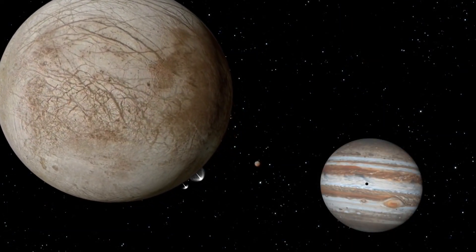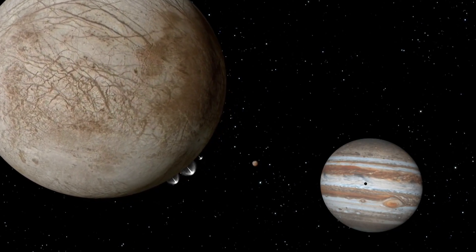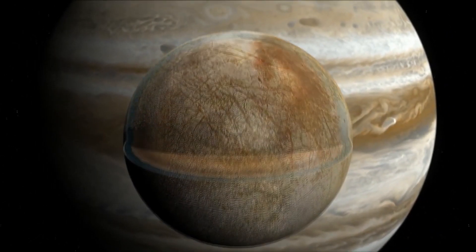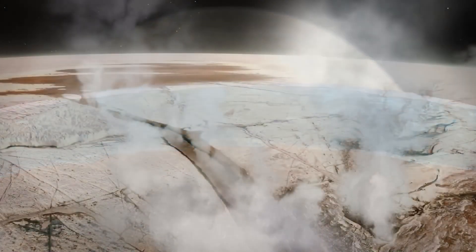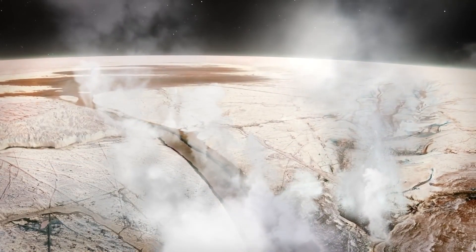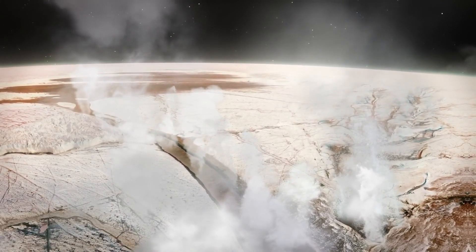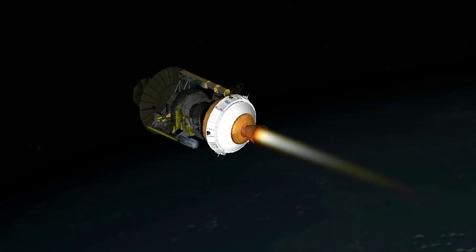Europa is the biggest moon of Jupiter with a huge ocean beneath the surface. The satellite's water under a huge layer of ice does not freeze because of the hot core of Europa, which is heated by Jupiter's gravity.